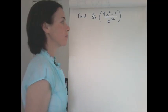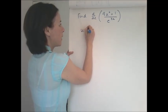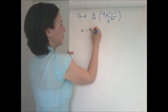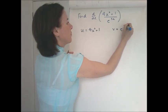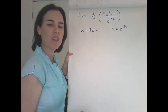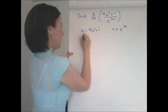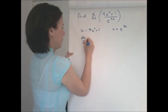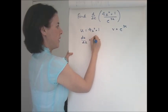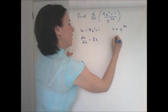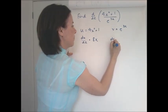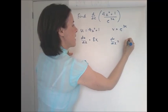Now the top we call u and the bottom we always call v, and each of those need to be differentiated. So 4x squared becomes 8x, 1 becomes 0, and dv/dx, e to the 3x stays the same but we multiply in front by the 3.